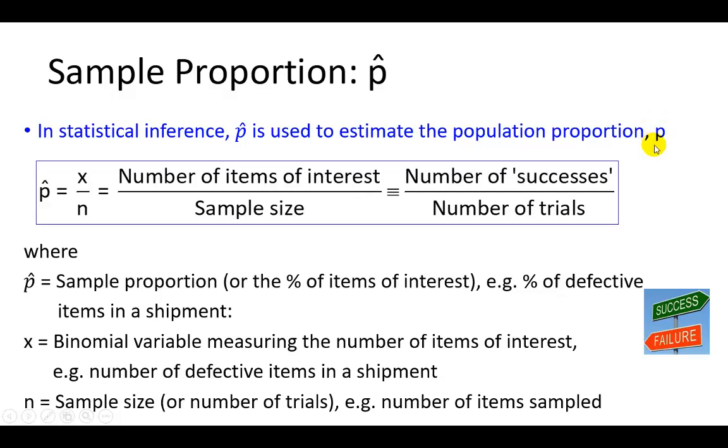In the absence of population data, we're confined to the use of samples to make inference. So p hat calculates the number of items of interest out of a sample that you collect, x divided by n, where x is the number of items of interest generically referred to as the number of successes, and n is the sample size or the number of trials of a certain experiment.